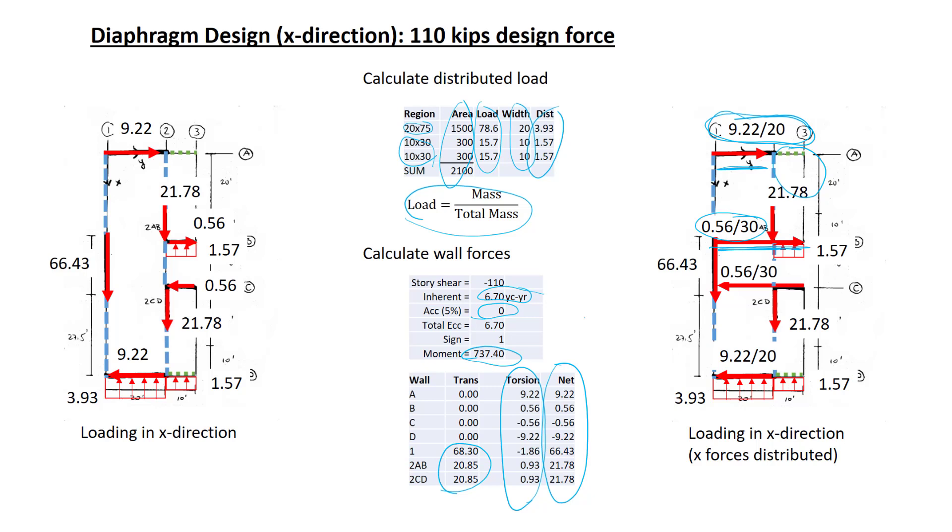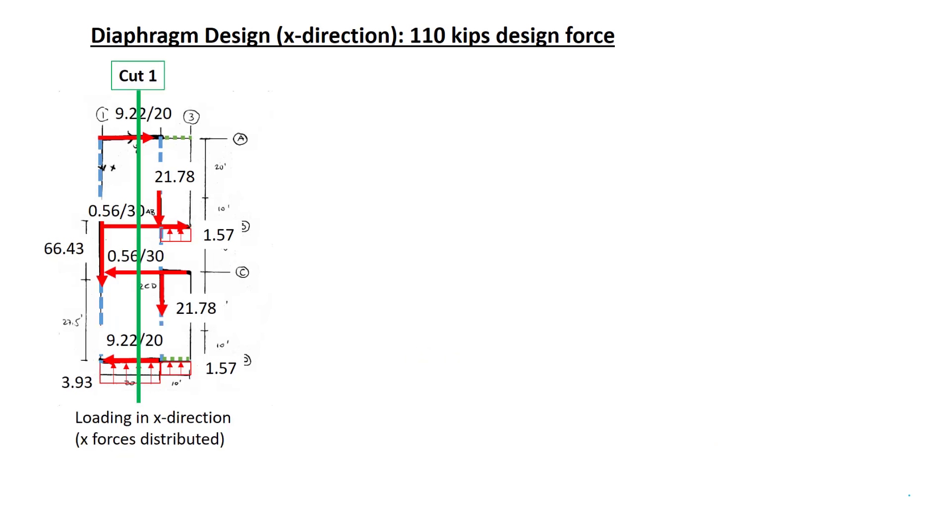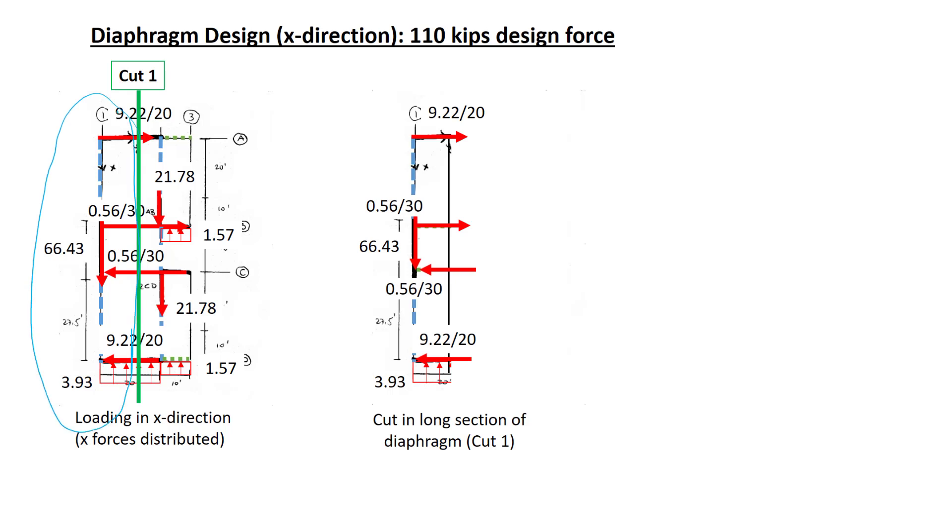Next, we'll start making cuts, and we'll see how we calculate internal forces such as moment and shear. We'll start by making a cut through the long section of the diaphragm, that is a section between grid lines 1 and 2. So I've included everything to the left of the cut. Of course, since I've made a cut, now I need to replace what used to be there by internal forces. So I'm showing here a shear and a moment.